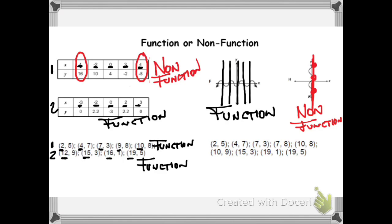When we look at our third set of points, let's look at the x values: 2, 4, 7, 7, and 10. Right away you notice that you have the value x=7 twice — first paired with 3, then paired with 8. That will make it a non-function.